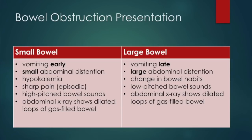In small bowel obstruction, vomiting occurs early and there is a small amount of abdominal distension. This is because the obstruction is more proximal, leaving less bowel for GI contents to back up in. Hypokalemia may also be present, and pain is typically sharp and episodic. High-pitched bowel sounds are more common, and the KUB will show dilated loops of gas-filled bowel.